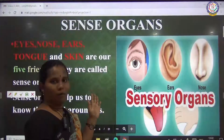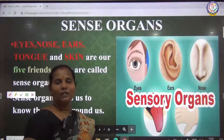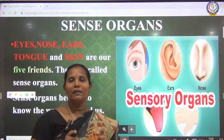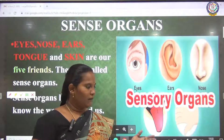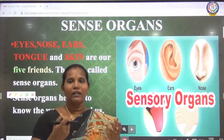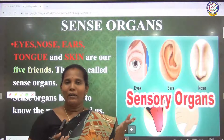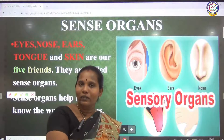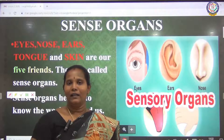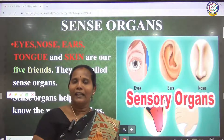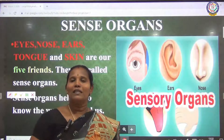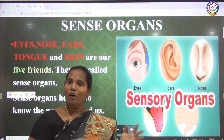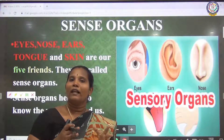Now we have to see about the sense organs. What is a sense organ? Sense means if we have any feeling, that is called the sense. We have pencils, pens, chairs, and benches - many things surrounding us. If you do anything to them, those things cannot get any feeling. They cannot cry, they cannot feel pain, they cannot smile. These are feelings. These things are called non-living things, because they are non-living things, so they cannot feel anything.